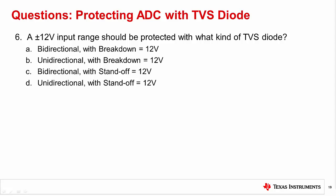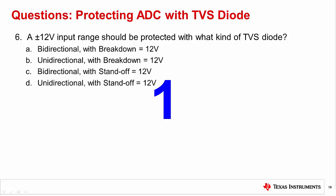Question six: A plus minus 12 volt input range should be protected with what kind of TVS diode? The correct answer is C — bidirectional with standoff equal to 12 volts. Since the signal is both positive and negative, a bidirectional diode is needed. The standoff voltage is the usable input range, so the standoff voltage should be set to 12 volts or higher.